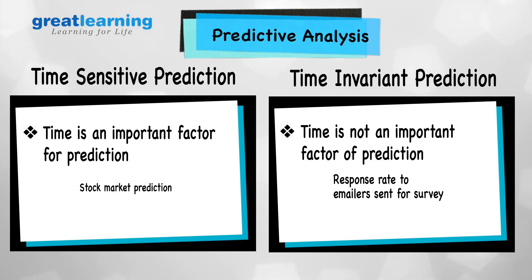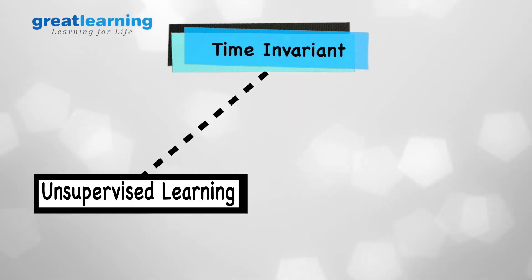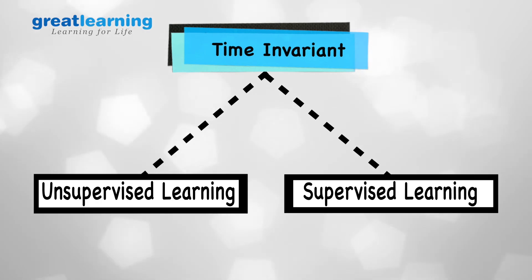What we will be doing in this program is we are going to look at the time series part, but largely focus on the time invariant predictions, because a large part of analytics uses time invariant prediction. Within the class of time invariant predictions, I would further subdivide into two branches: unsupervised learning and supervised learning. What's the distinction between the two?